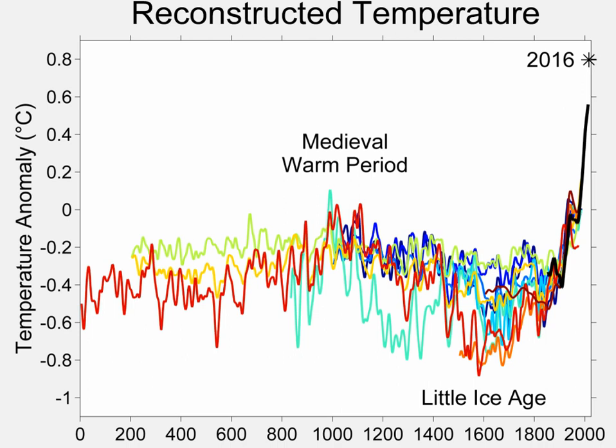There was a Little Ice Age centered on AD 1700. There was a Medieval Warm Period centered on AD 1000, though the exact timing and magnitude are uncertain and may have shown regional variation.